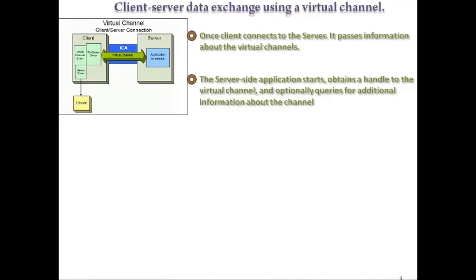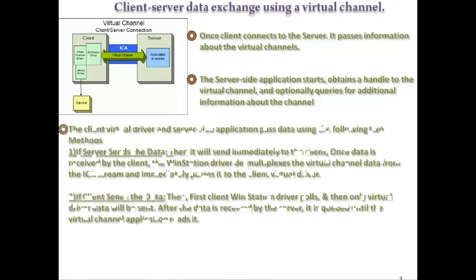The client virtual driver and server-side application pass data using two methods. First, if the server wants to send data, it sends immediately to the client. Once data is received by the client, the WinStation driver demultiplexes the virtual channel data from the ICA stream and immediately passes it to the client virtual driver. Second, if the client wants to send data, the client WinStation driver polls first, and then the virtual driver data is sent.